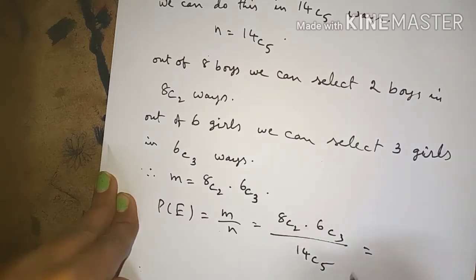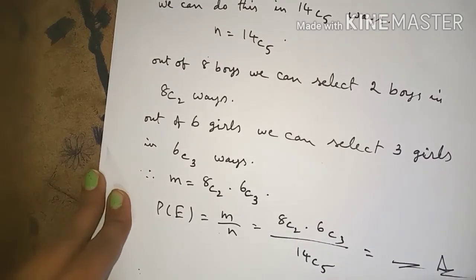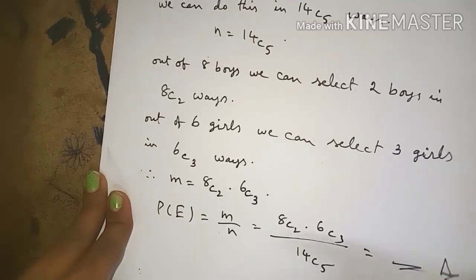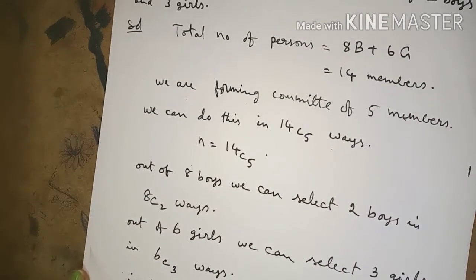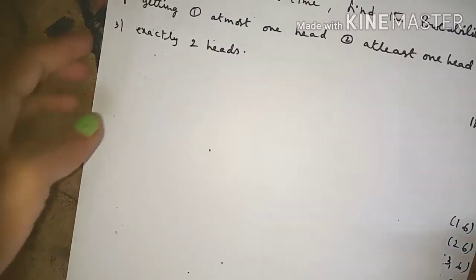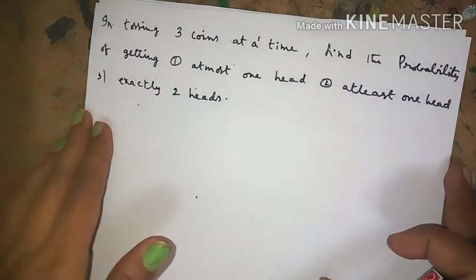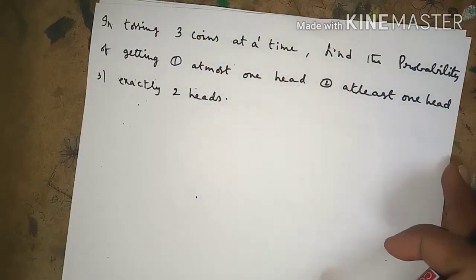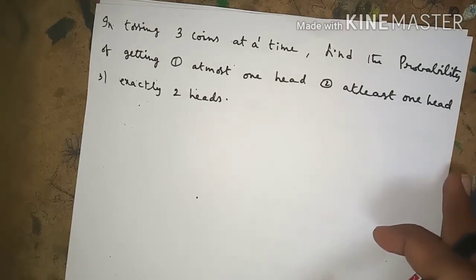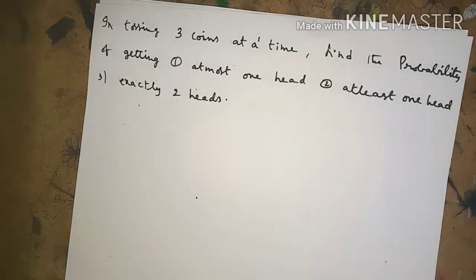Simplify using the calculator and write down the answer. That is the answer for this problem. The next problem is: tossing 3 coins at a time.